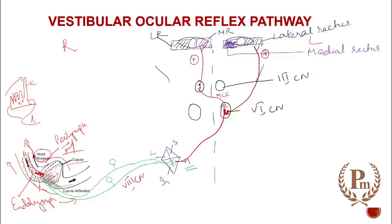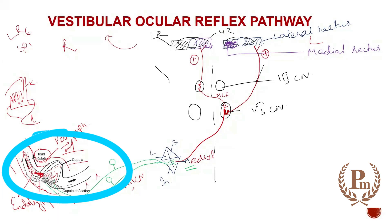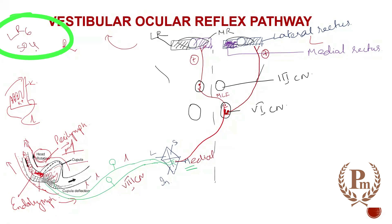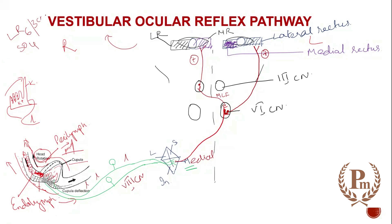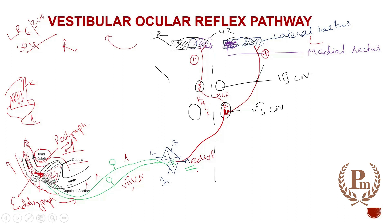This stimulatory pathway originates from the right side of the semicircular canal. Note that except the superior oblique supplied by the fourth cranial nerve and the lateral rectus supplied by the sixth cranial nerve, the other four ocular muscles are supplied by the third cranial nerve. The sixth cranial nerve directly supplies the lateral rectus, causing lateral movement of the left eye, and there will be medial movement of the right eye via the medial rectus.